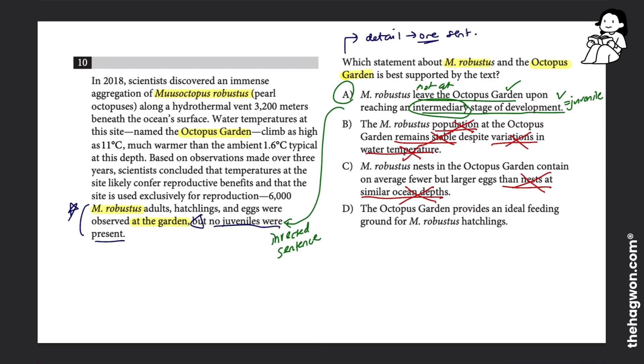D then goes on to say the octopus garden provides an ideal feeding ground for M. Robustus hatchlings. Ideal feeding ground means this is the best feeding ground for them. But we don't know. The passage doesn't say that it's the best place for hatchlings to live. It just says that hatchlings are also found or observed here.